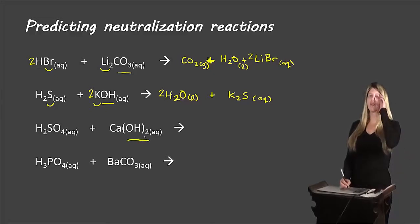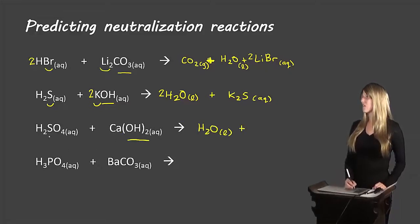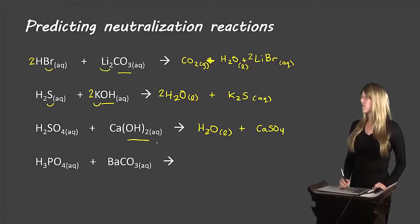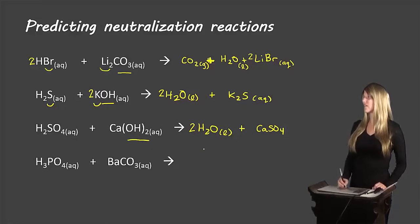Next example also has a hydroxide base, so one product is water. We're left with calcium and sulfate, giving us CaSO₄. Checking: one, two, three, four hydrogens — so we put a two on H₂O; one sulfate, one sulfate; one calcium, one calcium; two oxygens, two oxygens. All balanced.